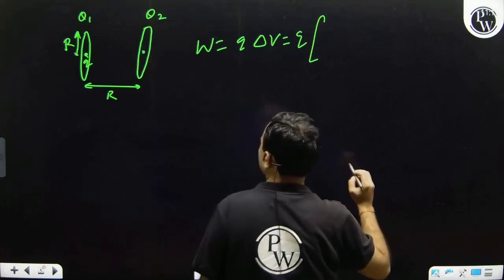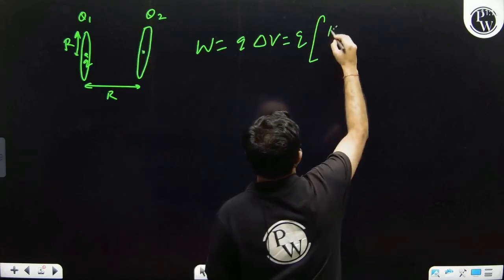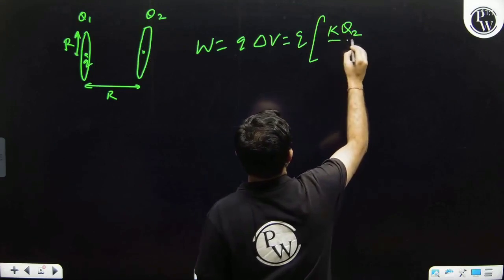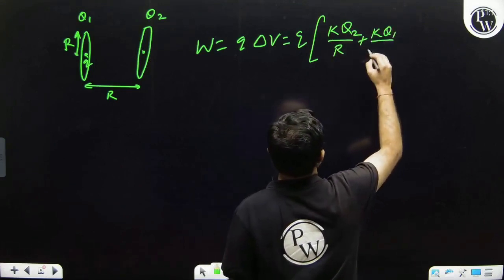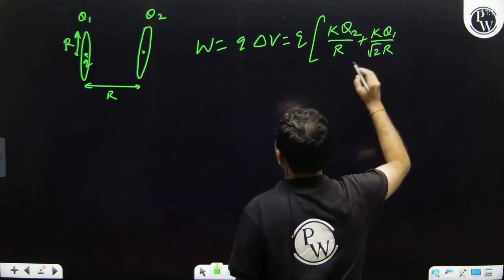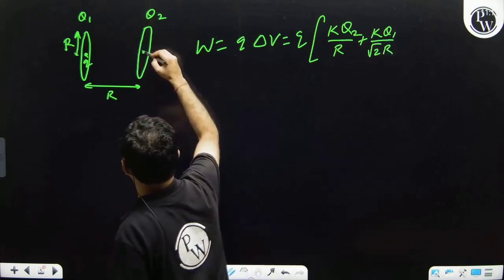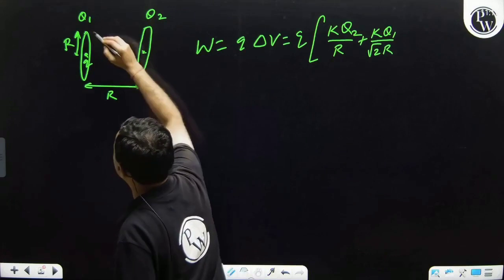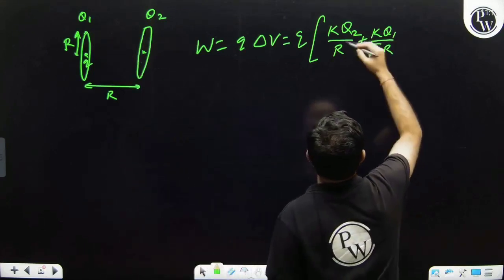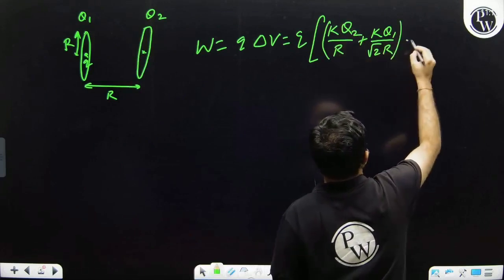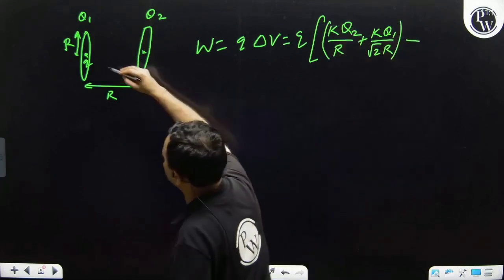So work done will be q delta V. Now potential at the center of this ring, final potential will be K Q2 by R plus K Q1 by root 2 R because distance between this point center and circumference of first ring is root 2 R.